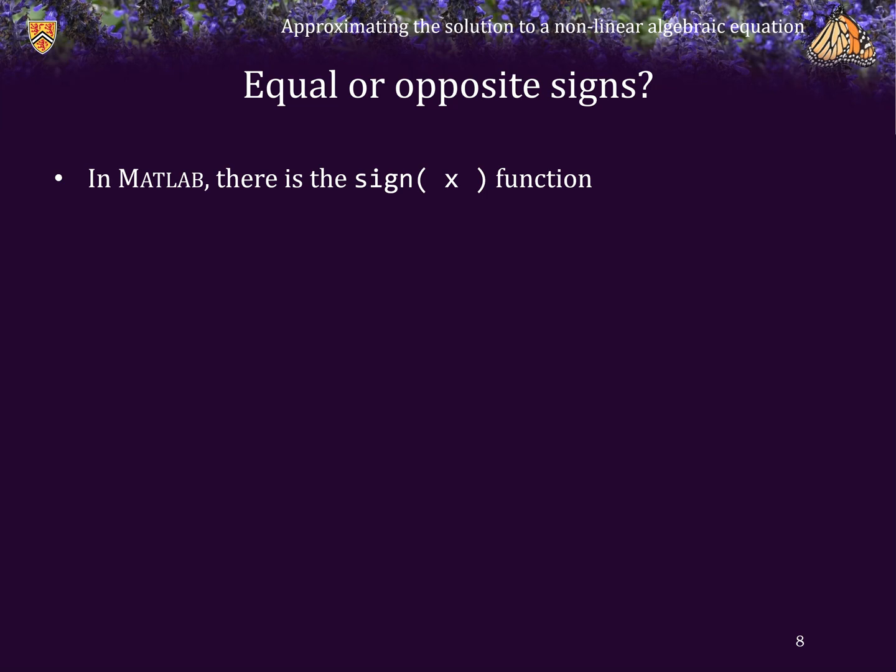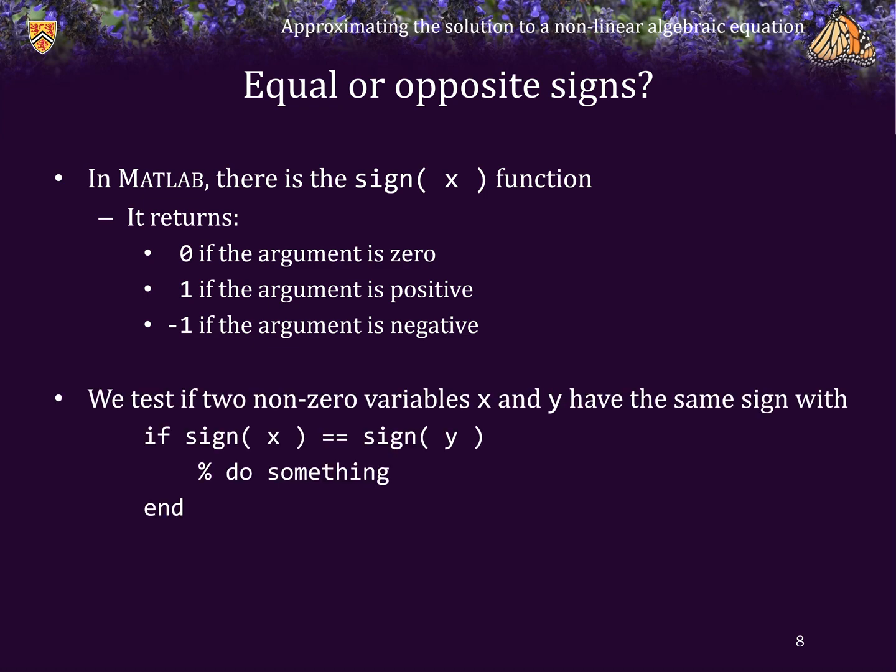Now, in MATLAB, there is the sign function. This function returns zero if the argument is zero, that is plus or minus zero. One if the argument is positive. Otherwise, it returns negative one, indicating that the argument is negative. Consequently, we can test if two non-zero variables have the same sign with the following conditional statement.